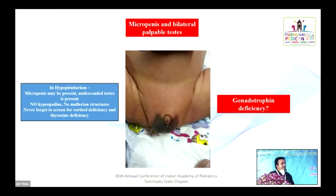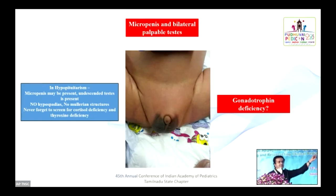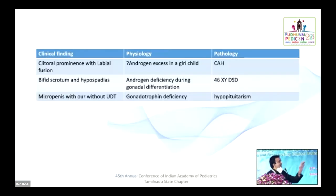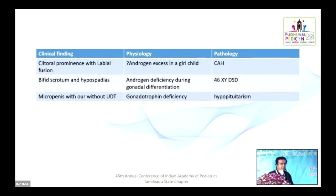A small penis with undescended testes raises the question of gonadotrophin deficiency. By the time gonadotrophins take control of sexual differentiation, the gonad is already differentiated — so these children may not have hypospadias but may have micropenis. When you see micropenis with undescended testes, think of hypopituitarism and gonadotrophin deficiency. Remember these children may also have underlying cortisol deficiency and thyroxine deficiency, which are more important to treat urgently. Clitoromegaly and labial fusion in a girl suggests CAH; bifid scrotum and severe hypospadias suggest androgen deficiency — is it 46XY DSD?